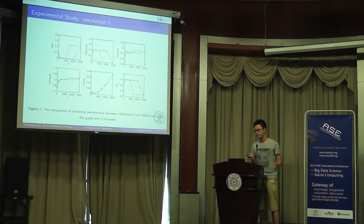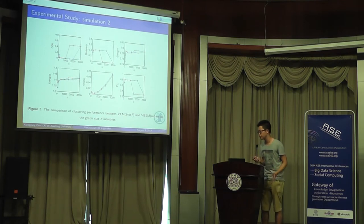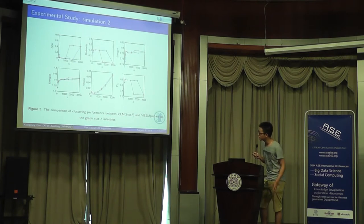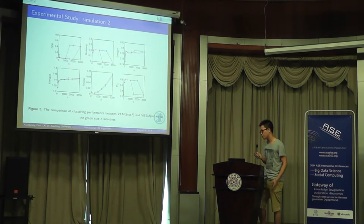In simulation 1, we just fixed the graph size N as a constant 100. In simulation 2, we change the graph size N from 100 to 3000. We can see from the figure that blue is VBEM and red is VEM. We can see that when the graph size N is larger than 1,500, the VBEM failed to detect the group structure. But the VEM can still detect the structure. So we conclude that the VEM has the potential to get more robust estimates.